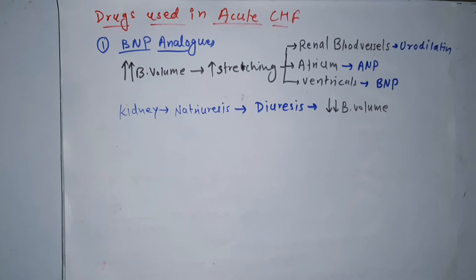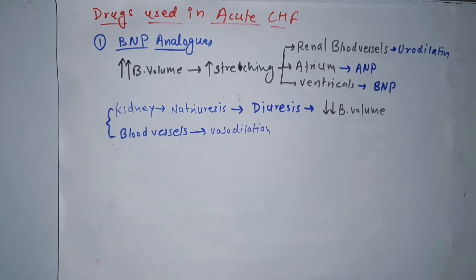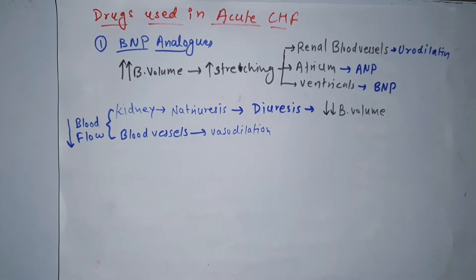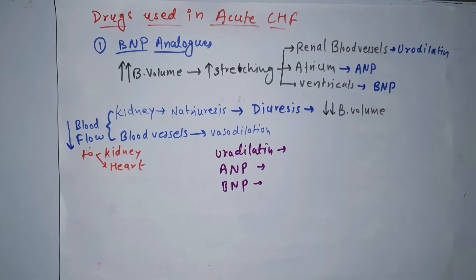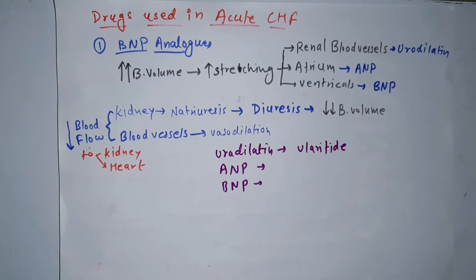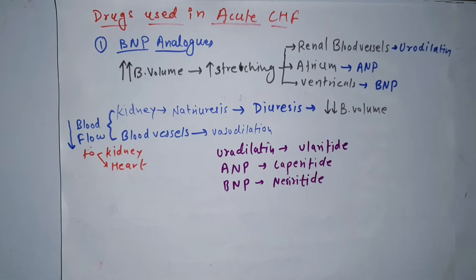These substances also affect blood vessels to cause vasodilation, decreasing blood flow to the kidney and to the heart. We have drugs which are analogues of these substances: ularitide, which is an analog of urodilatin; carperitide, an ANP analog; and nesiritide, a BNP analog. Out of these, only nesiritide is an FDA-approved drug.